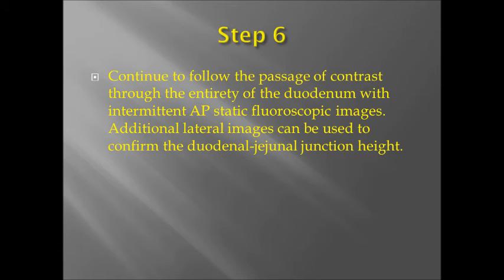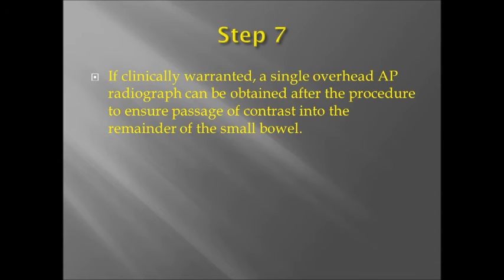Step 6: Continue to follow the passage of contrast through the entirety of the duodenum with AP static fluoroscopic images. Additional lateral images demonstrating contrast at the duodenal-jejunal junction can confirm duodenal-jejunal junction height. Step 7: If clinically warranted, a single overhead AP radiograph can be obtained after the procedure to ensure passage of contrast into the remainder of the small bowel.